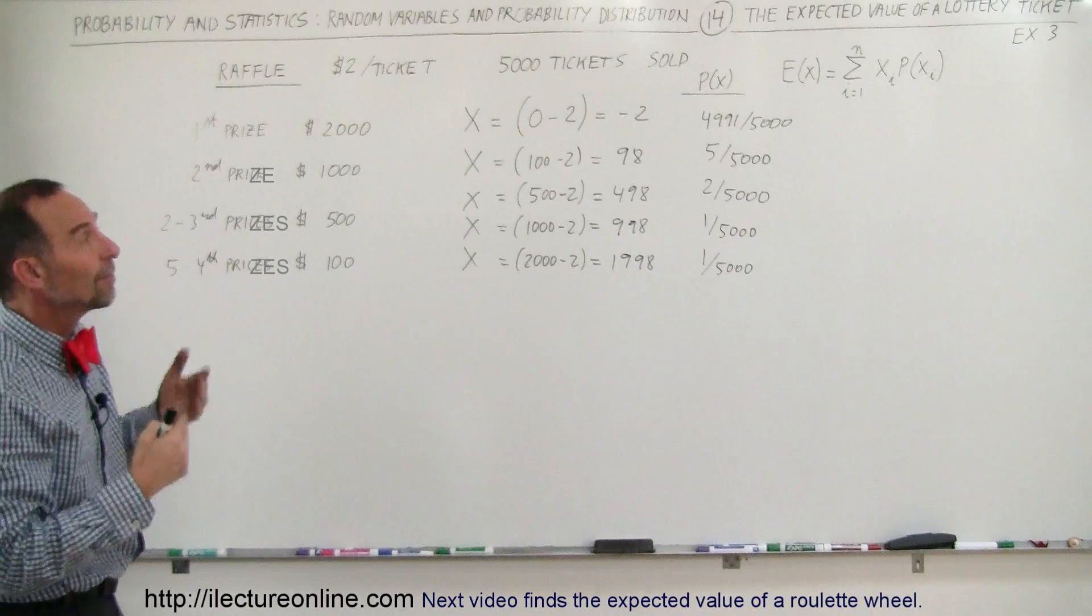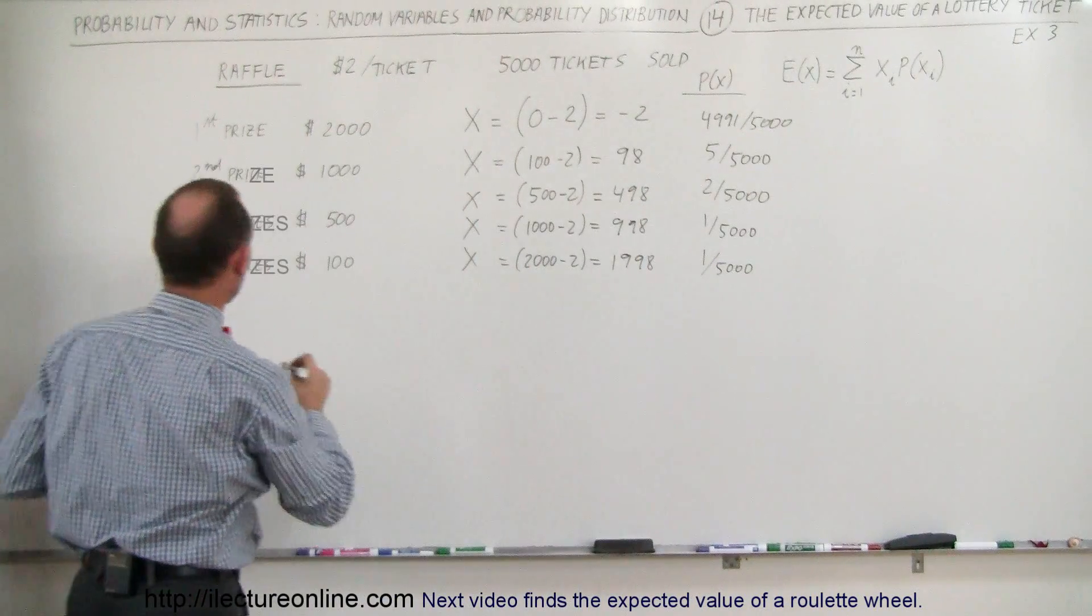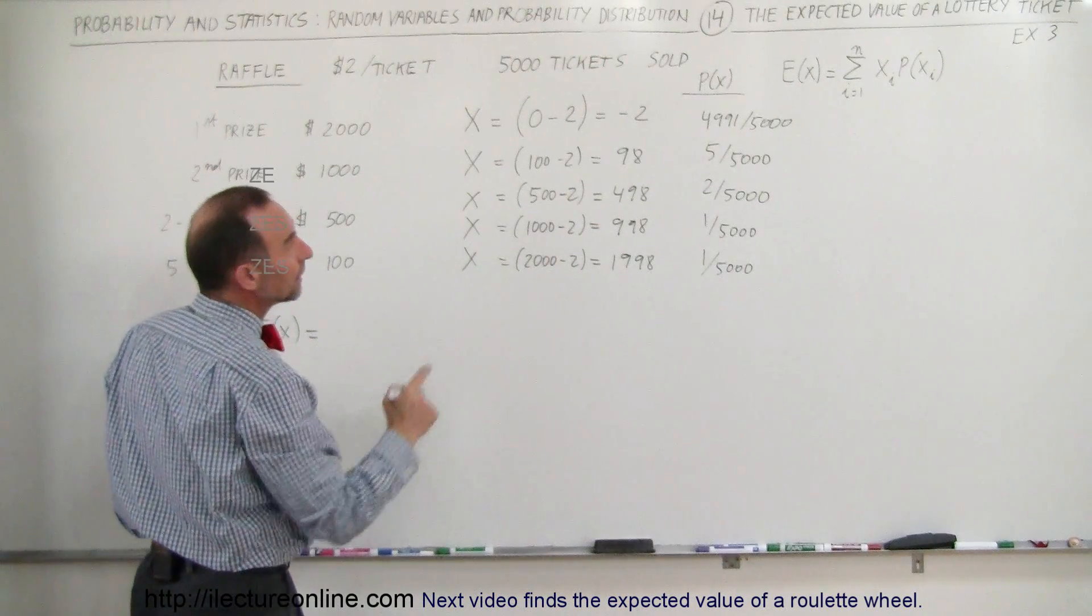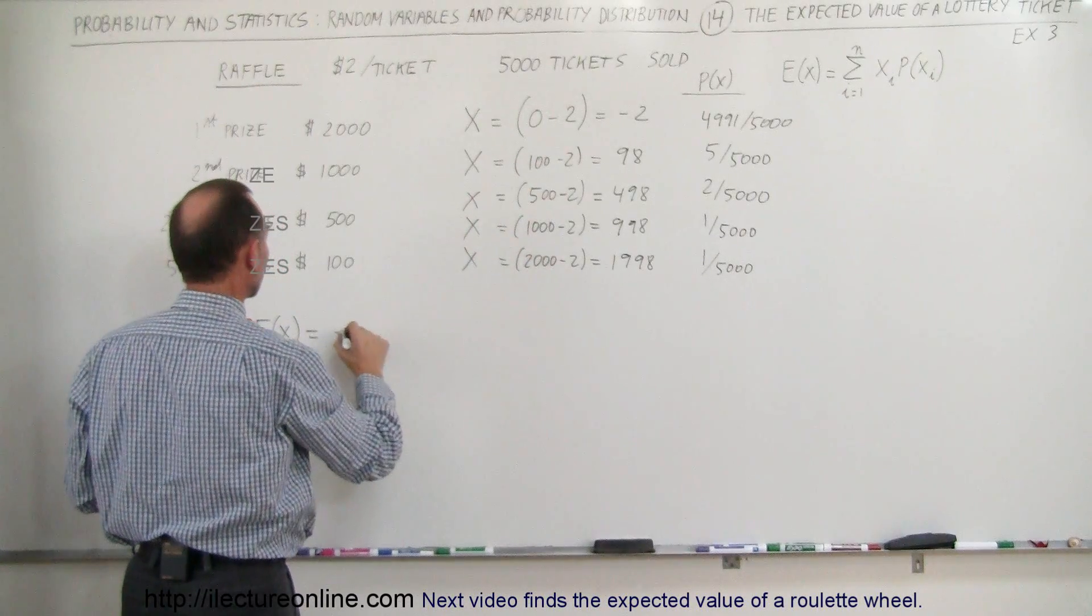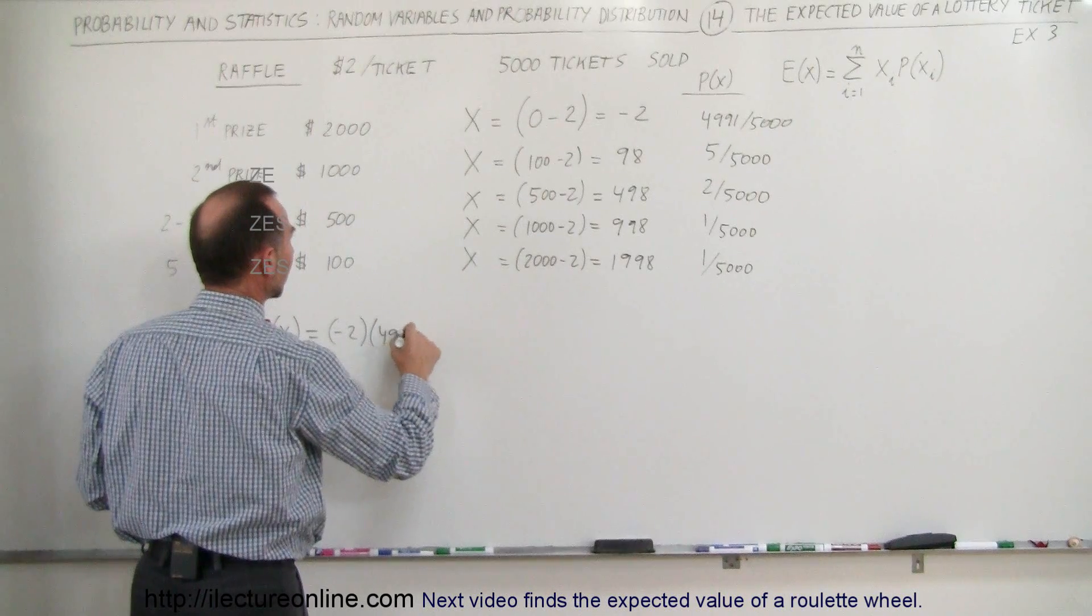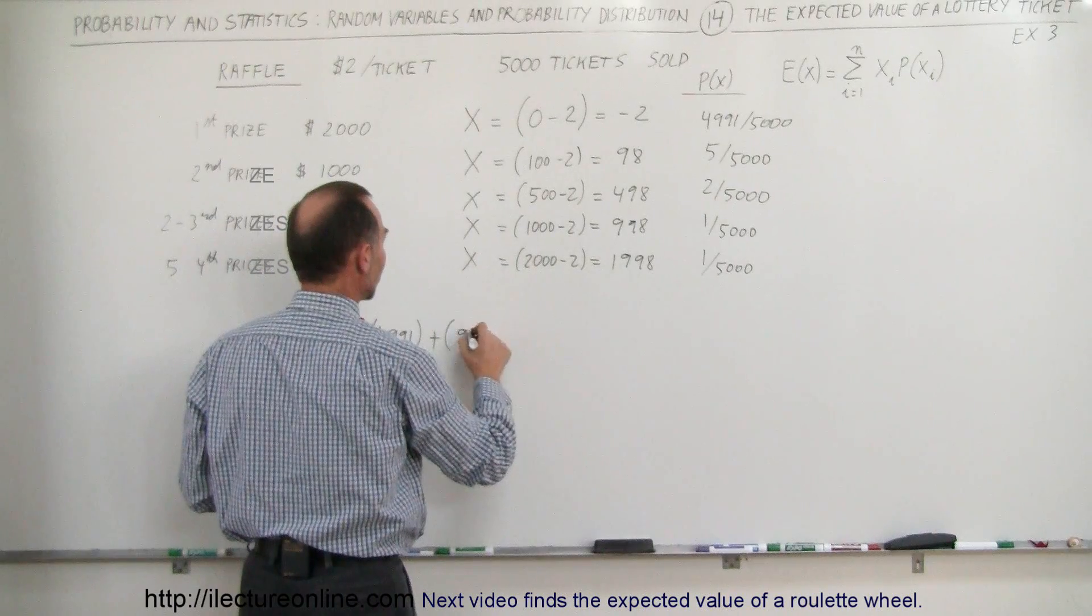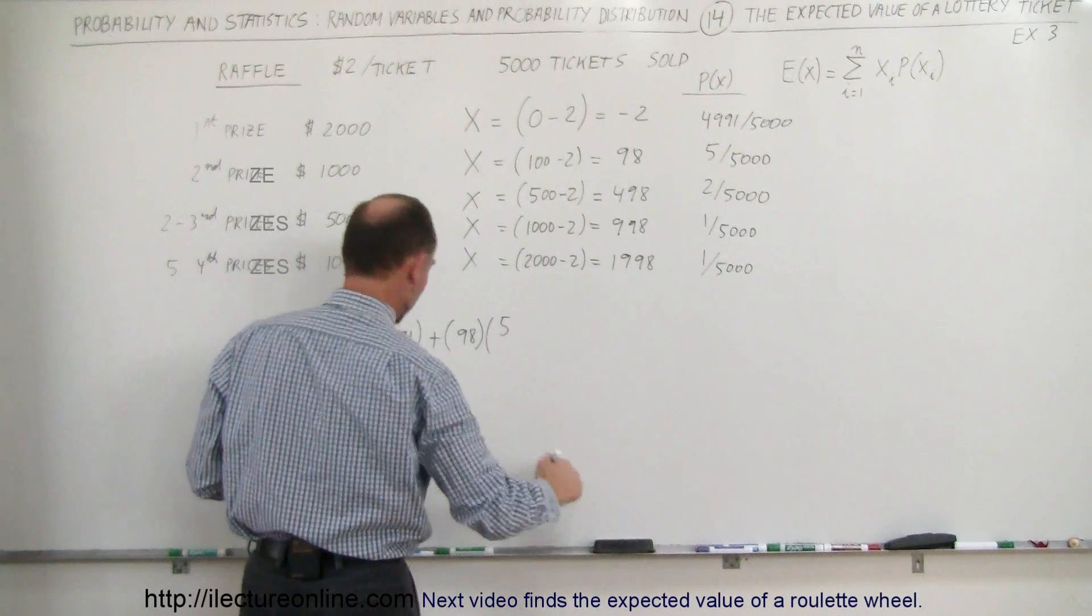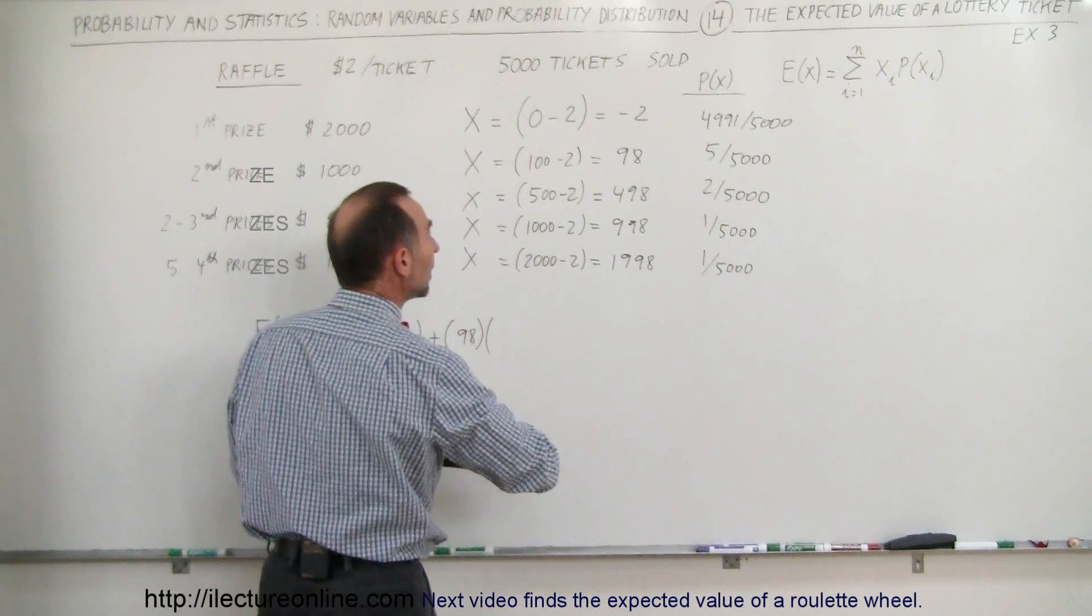So now we use the same equation that we used before for the expected value. So the expected value is going to be equal to the value for X. So let's start with negative 2 and multiply times the probability of 4,991 divided by 5,000, plus the value of that type of ticket, which is 98, and the probability, that would be 5 divided by 5,000.